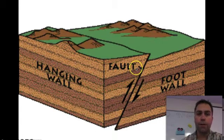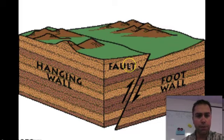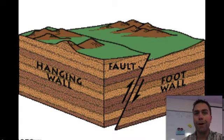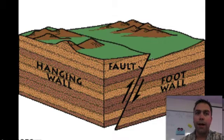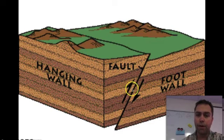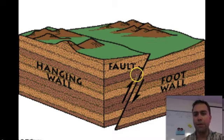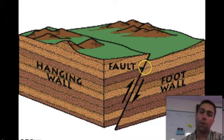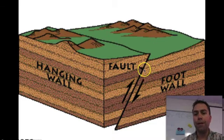Before we talk about faults, let's look at a couple of terms. A fracture is a break in rock caused by stress. A fault is movement along that break. Two important terms you need to understand are the hanging wall and the foot wall. The hanging wall is above the fault plane, and the foot wall is below it. A good way to remember this: if you were walking down a fault, your feet would be on the foot wall, and the hanging wall would be above your head.